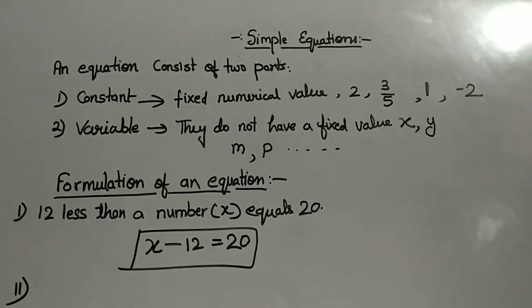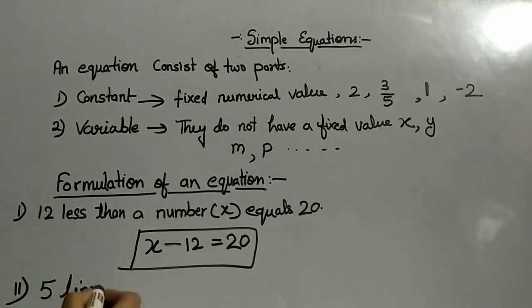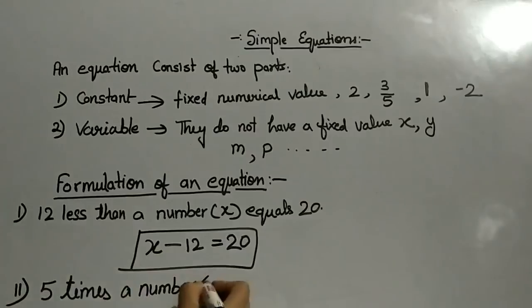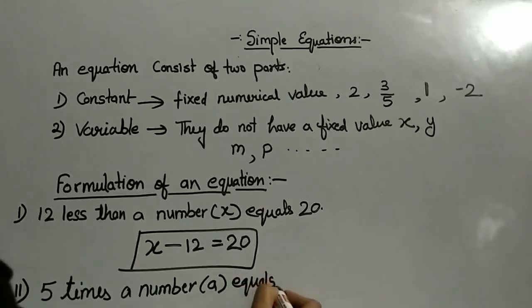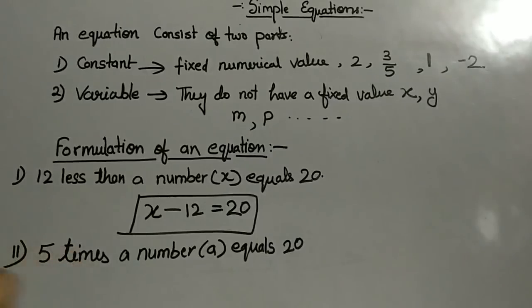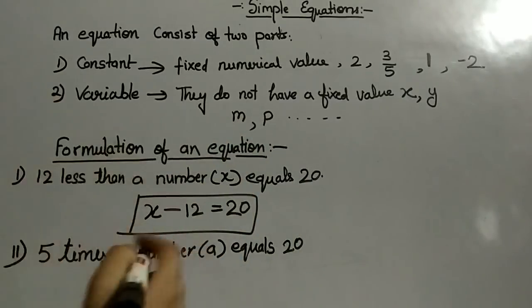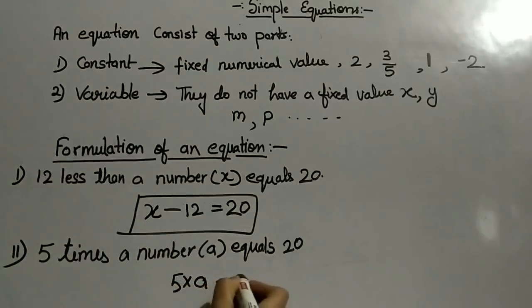Second example: five times of a number A equals 20. Here, times means multiply. So five times a number A equals 20. Five multiplied by A equal to 20. Or we can write it as 5A equal to 20.